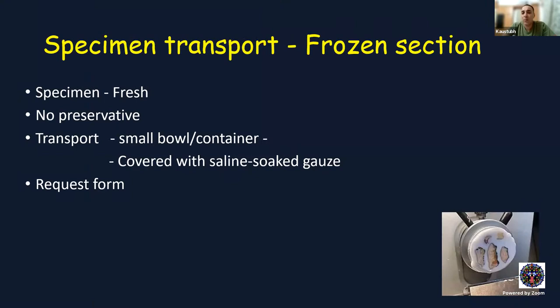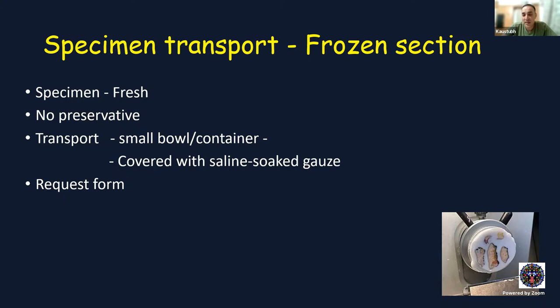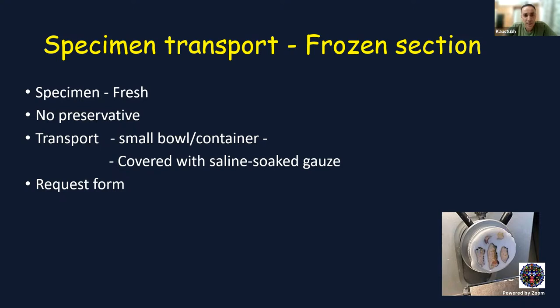For frozen section specimens, ideally operate in a facility with an in-house lab and frozen section capability. If within approximately 10 km, the specimen must reach the lab within 10 minutes — beyond that, autolysis begins and tissue degenerates. If sending to a nearby lab, wrap the specimen in a saline-soaked gauze, cover with another saline-soaked gauze, place in a rigid container, and send with the request form.